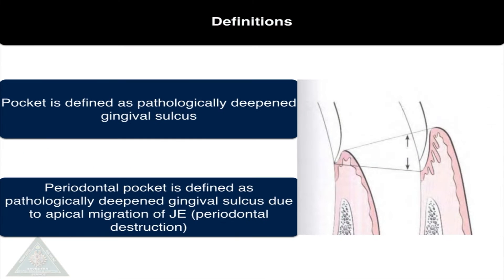Pocket is defined as a pathologically deepened gingival sulcus, whereas periodontal pocket is defined as a pathologically deepened gingival sulcus due to apical migration of junctional epithelium or periodontal destruction.